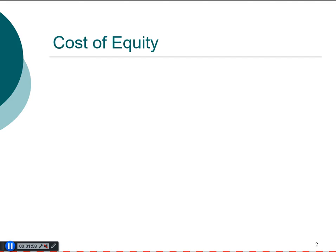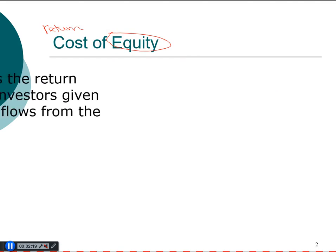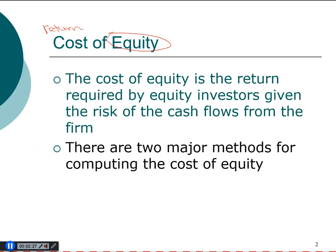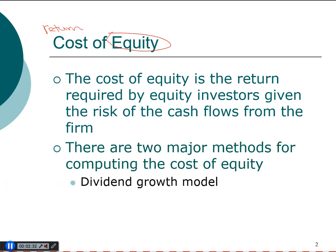We're going to do a quick review on how to compute the required return by stockholders and bondholders — we'll call it cost, but remember that the term cost in this chapter actually refers to the return. There are two approaches to estimate the required return for equity: the dividend growth model and the security market line, or capital asset pricing model.